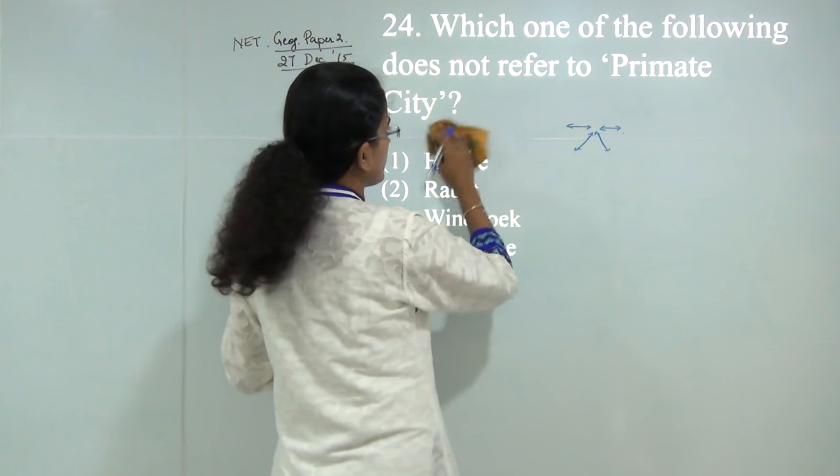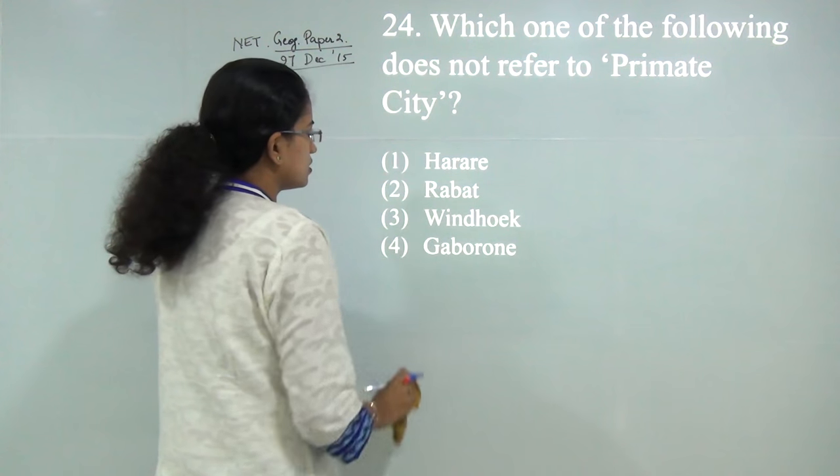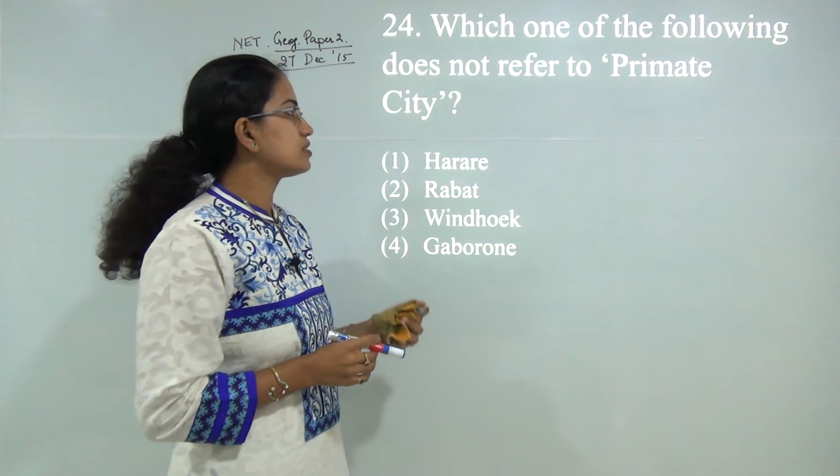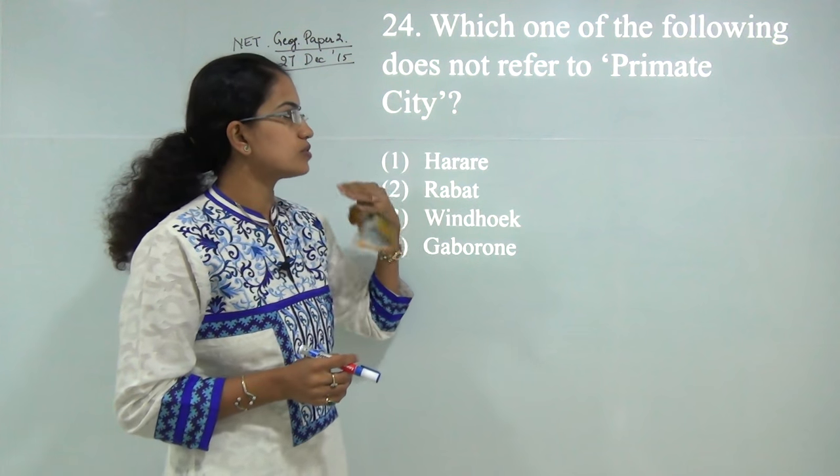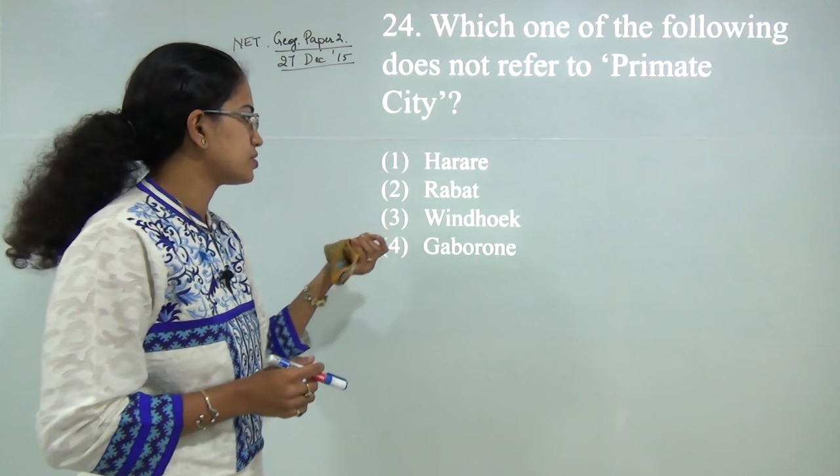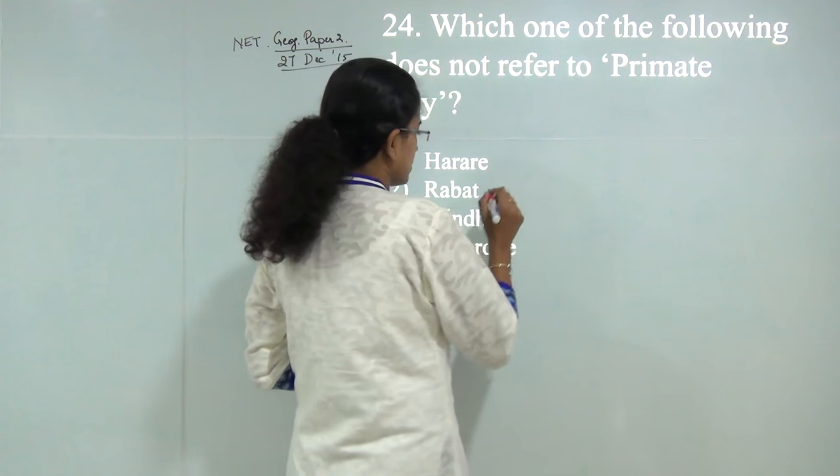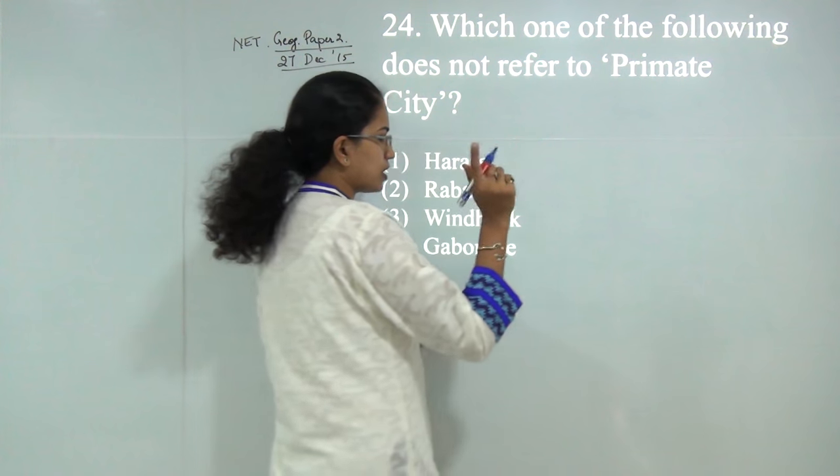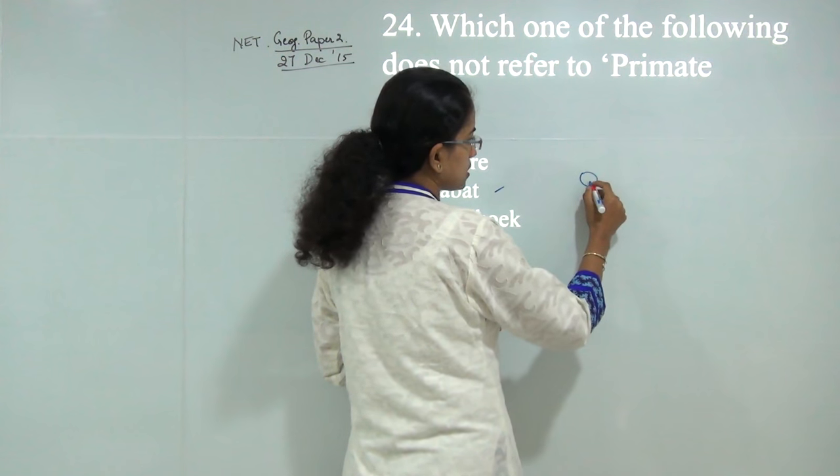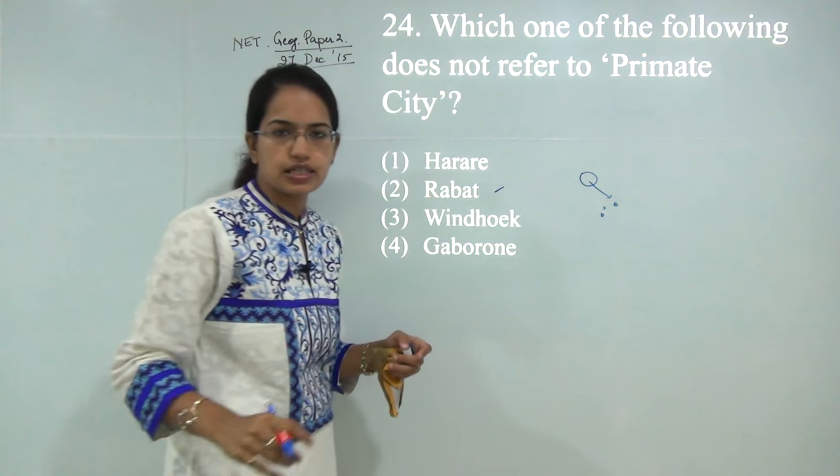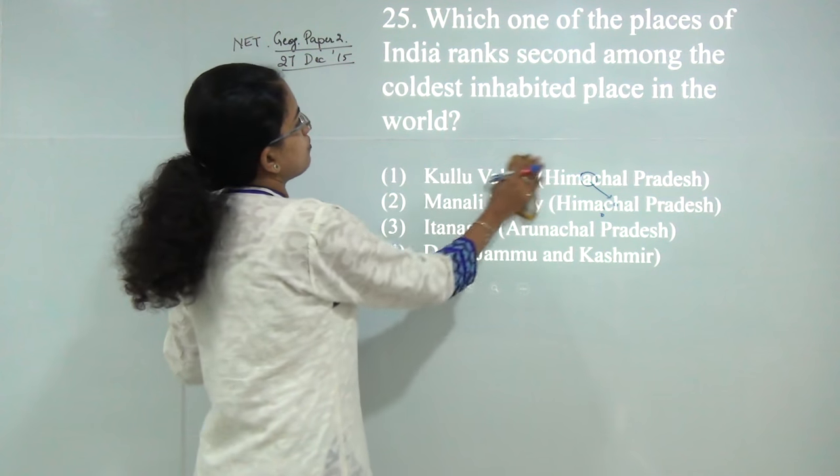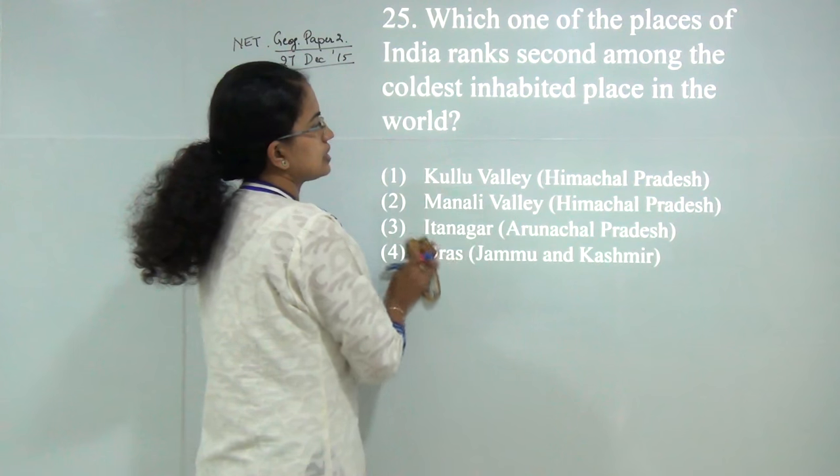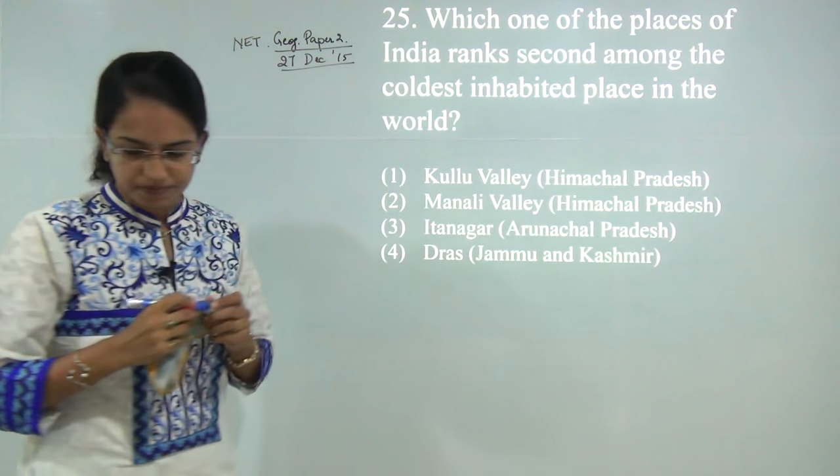Which of the following is not referred to as primate city? This question is for students who revised the syllabus well because it asks not for common primate cities but exceptional ones. Rabat would be the correct answer in Morocco—it's not an example of a primate city. A primate city is one exceptionally larger than the next city in line.